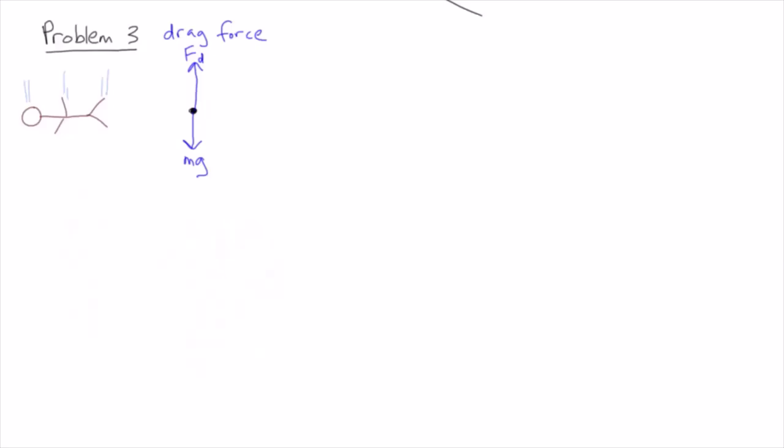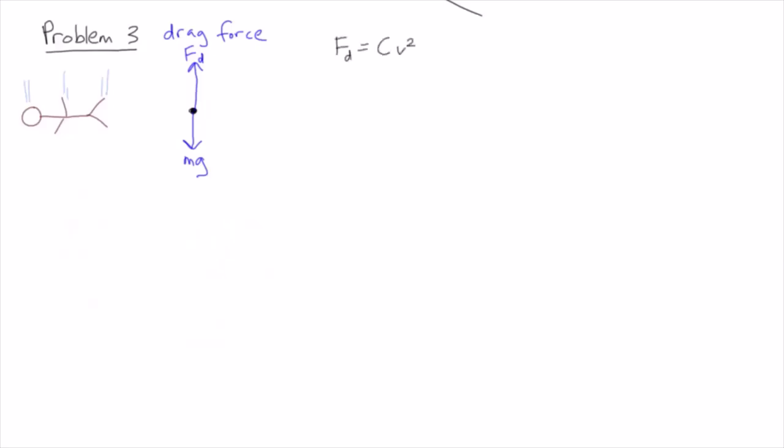A skydiver is large and fast moving so we can express the drag as Fd equals cv squared, where v is the speed and c is a constant which depends on things like the air density, the shape of the skydiver and so on.